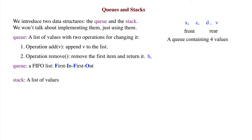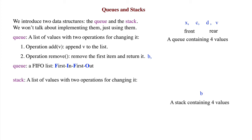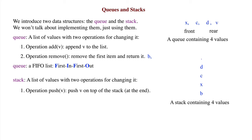A stack is a list of items that can be changed in two ways. A stack is usually drawn with items stacked one on top of the other. Here are the two ways to change a stack: put the item on the top of the stack, or take the top value off the stack and return it.